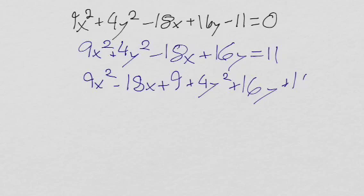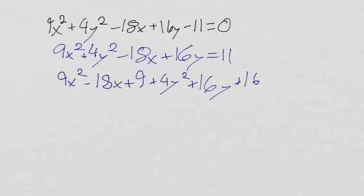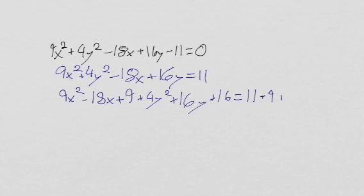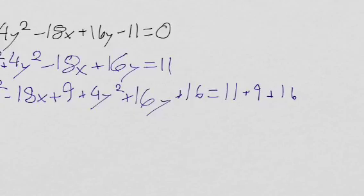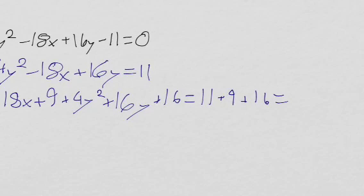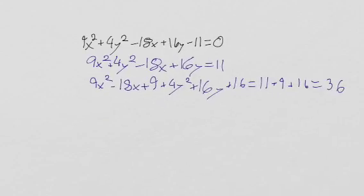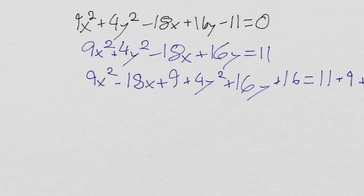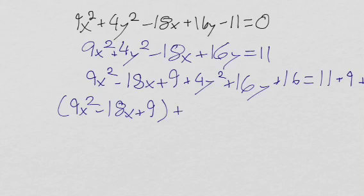11 plus 16 equals 11 plus the 9 that we added, plus the 16 that we added, which will end up giving us 36. So I will group these together and we will get 9x squared minus 18x plus 9, plus 4y squared plus 16y plus 16.